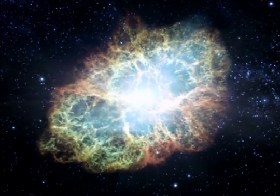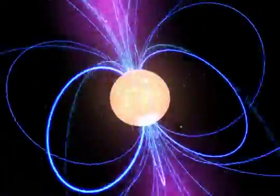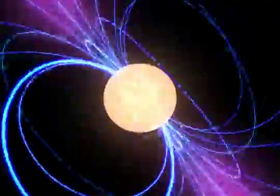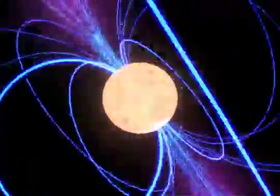The supernova left behind a magnetized neutron star, a pulsar. It's about the size of Washington, D.C., but it spins 30 times a second.